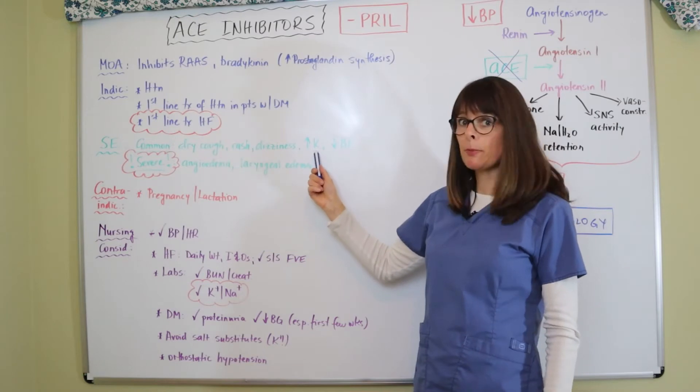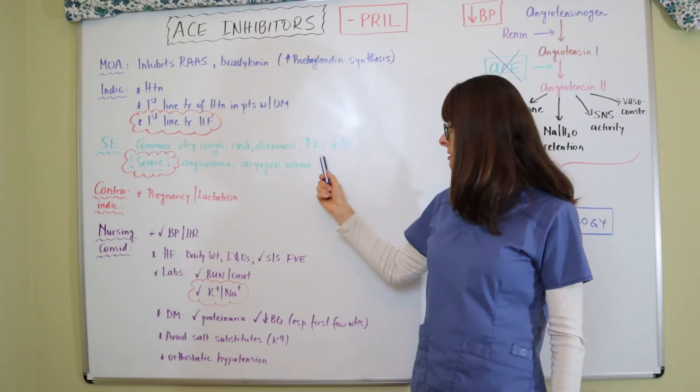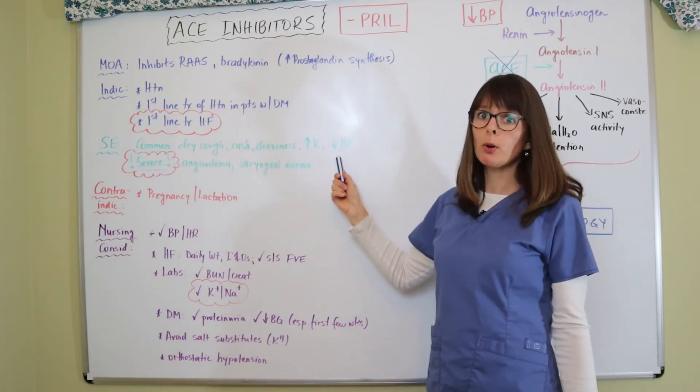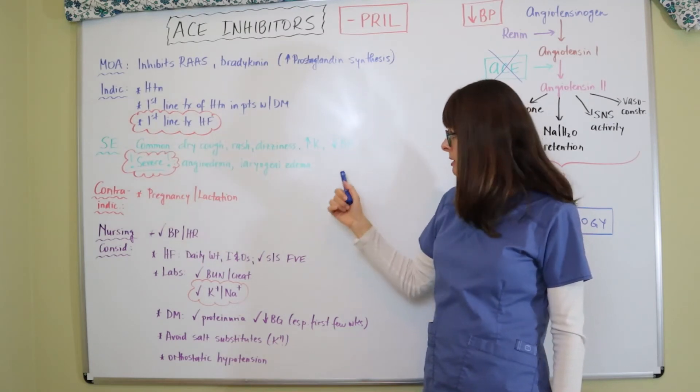Hyperkalemia, which we always need to be careful with, especially with our diabetic patients. And then it can also lead to hypotension. So now if we completely inhibit this cascade, then the blood pressure might just be too low.